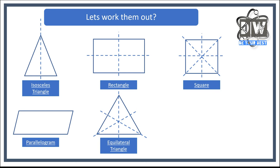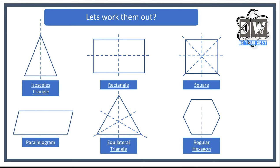Last but not least, we have a regular hexagon. How many lines of symmetry do you think it has? Let's draw them: one, two, three, four, five, six — it's got six lines of symmetry.